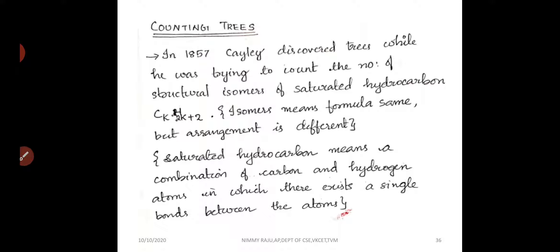In saturated hydrocarbons, the carbon atoms and hydrogen atoms exist keeping a single bond. We have to find the number of structural isomers of saturated hydrocarbons. Isomers means the chemical formula is the same, but the arrangement is different.